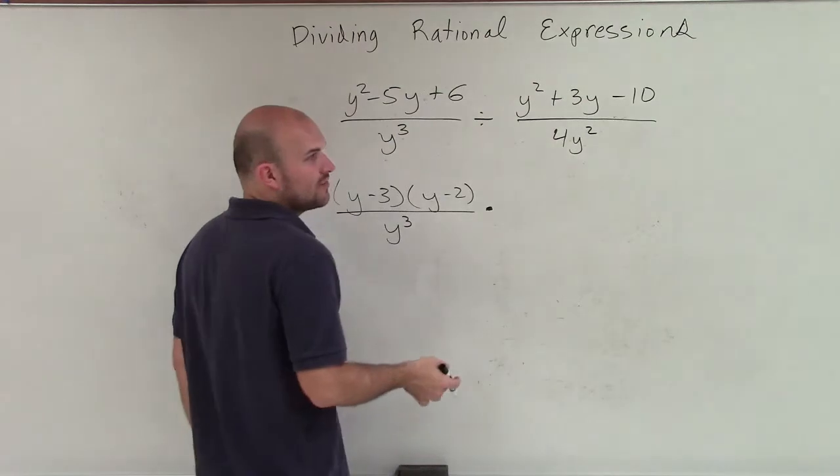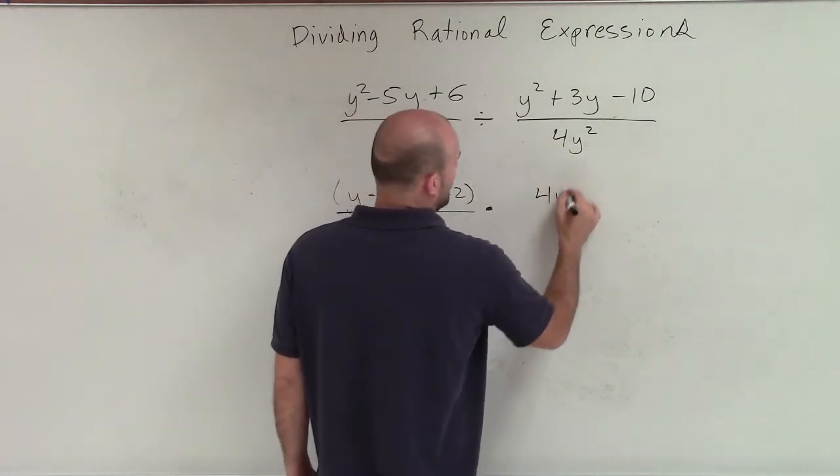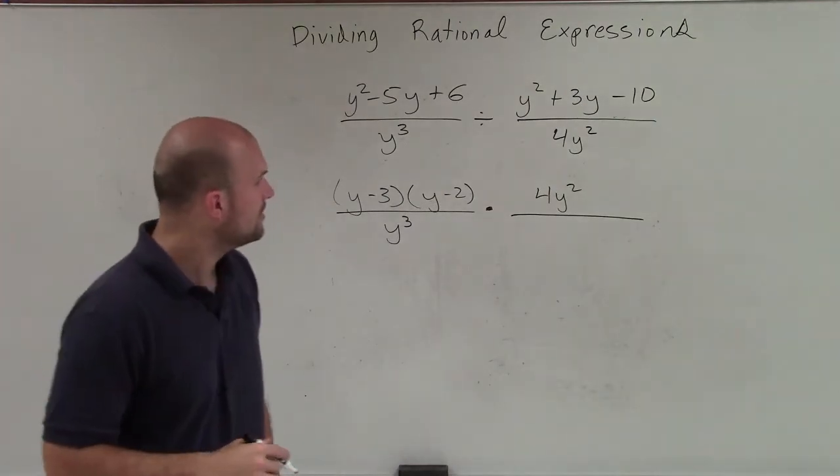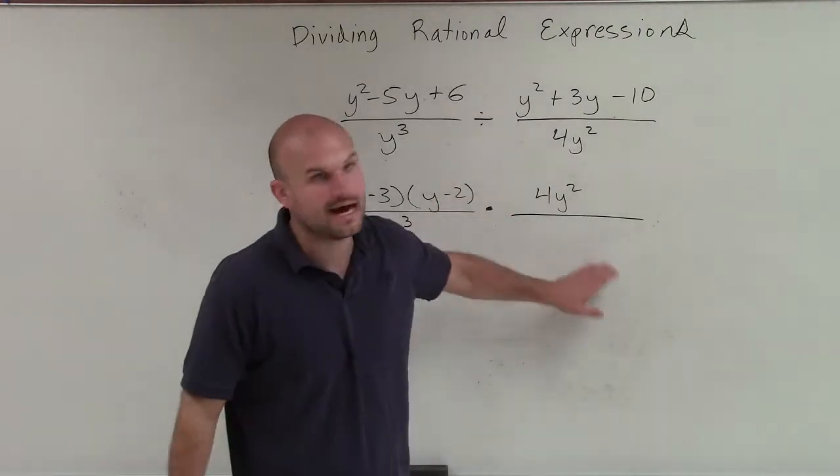Now, I'm going to reciprocate this already, all right? So I'm just going to rewrite the 4y squared up top. And then I'm going to write my factored form of y squared plus 3y minus 10, and now in my denominator.